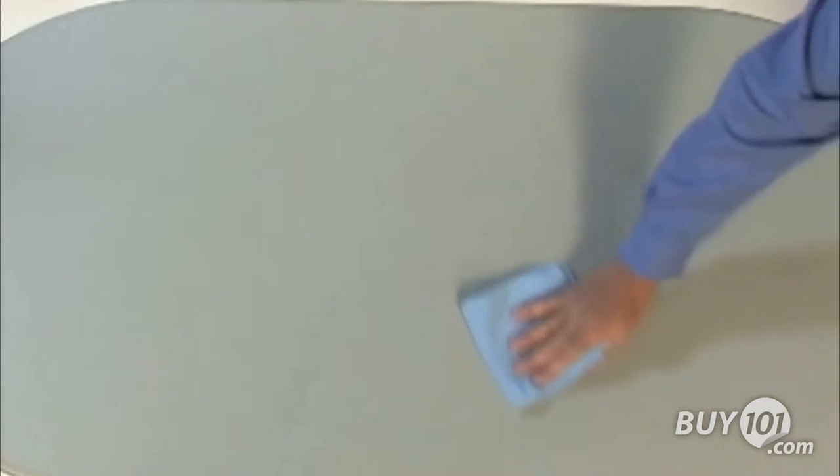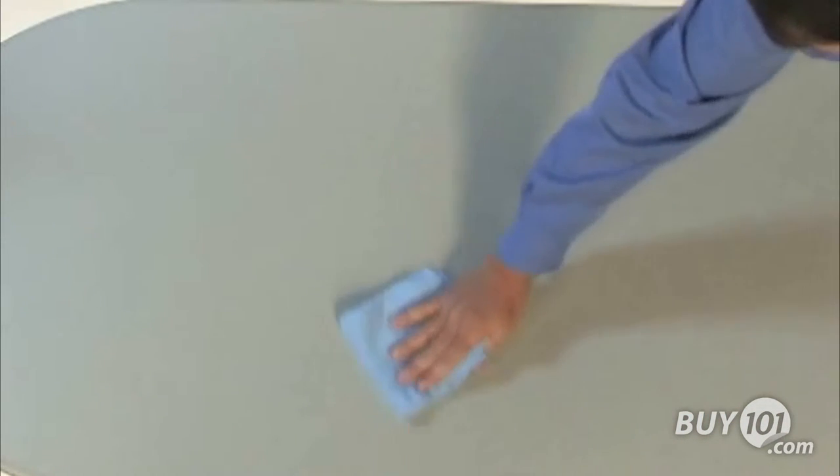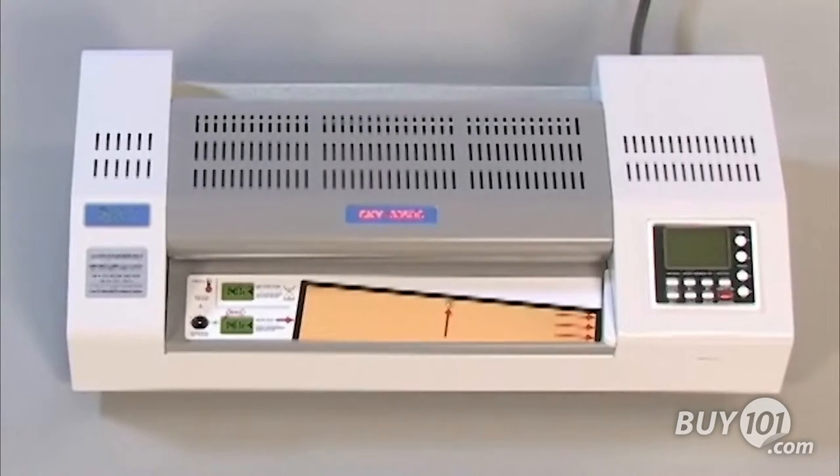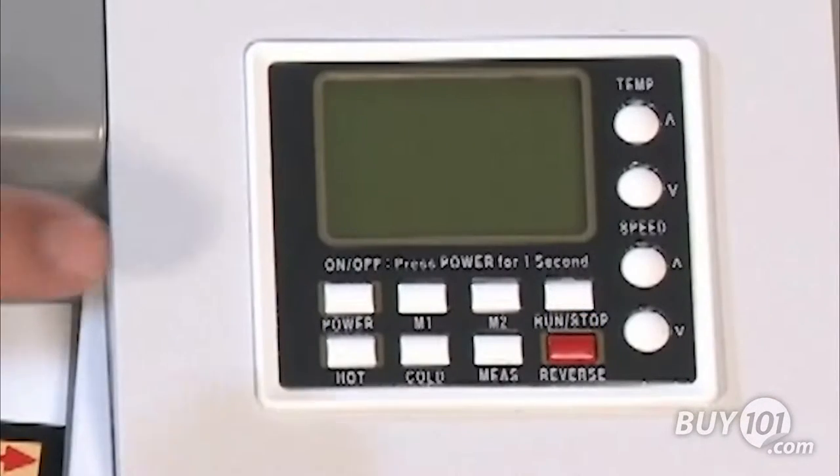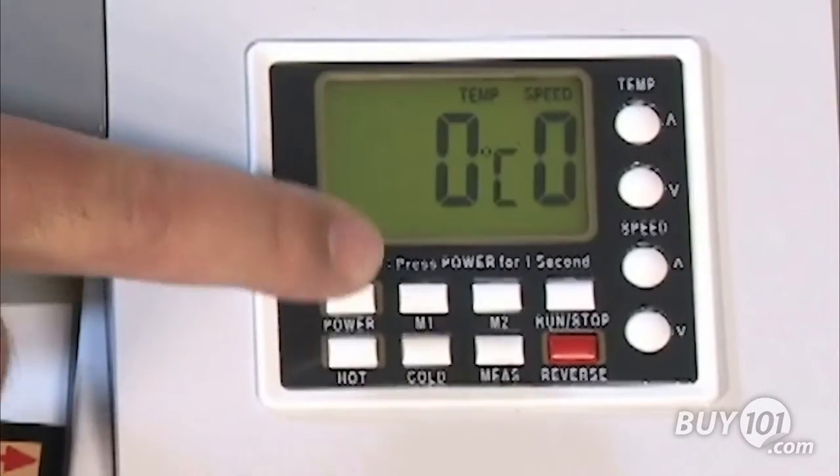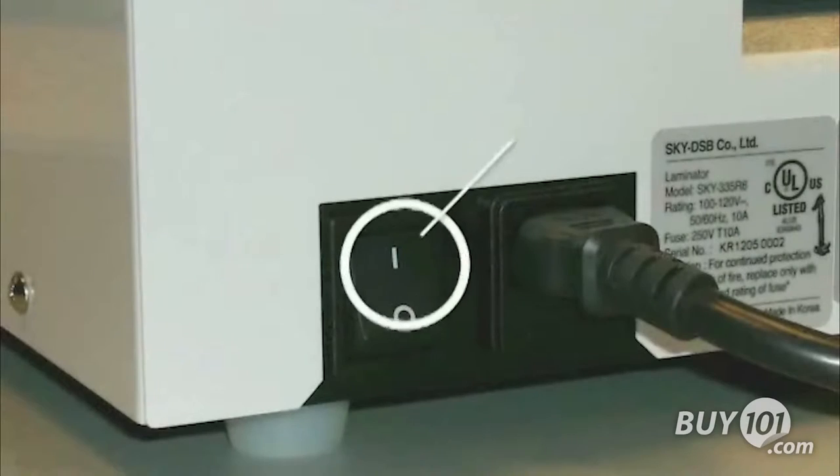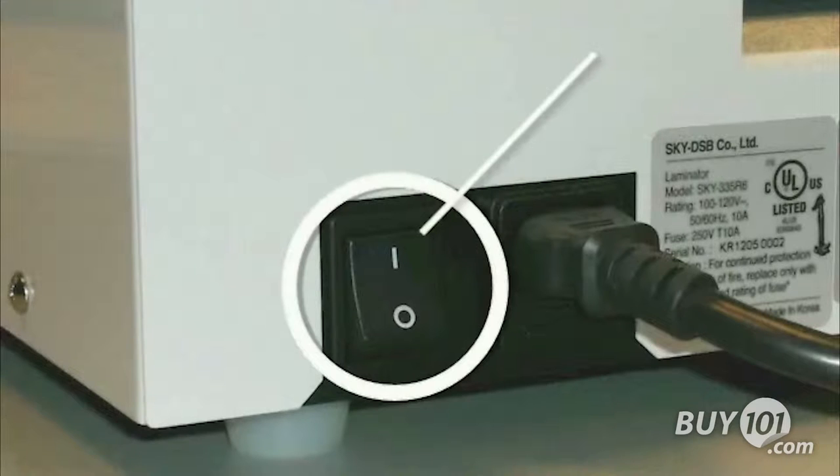Dust, lint, and other debris can damage the laminator and ruin the final product. Assemble a custom photo book. Get the laminator ready. Press the on-off button on the control panel for one second to turn on the device. If the display does not light up, verify the power switch on the back of the laminator is in the on position.